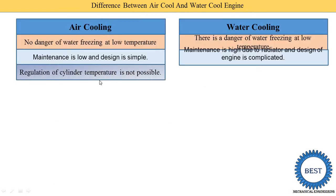The next point: regulation of cylinder temperature is not possible in air cooling. During air cooling, the cooling is uneven because the flow of air is different on different sides of the cylinder. Since the air flows naturally, we cannot control its flow — on some sides it is higher, sometimes it is lower. That's why temperature control is not possible in air cooling.